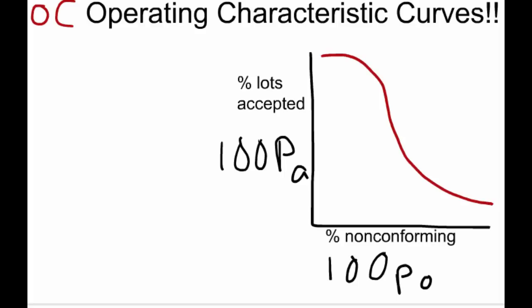So how do we interpret this graph? Let's just pick a point and talk about it. Let's say this point, this black dot, represents 2% non-conforming. Let's say that's 2. In that case—well, first of all, I need to tell you that this scale goes up to 100. So if we had 2% non-conforming, let's say this lines up to be 95% lots accepted. So we have 2% non-conforming, that means about 95% of the lots will be accepted.